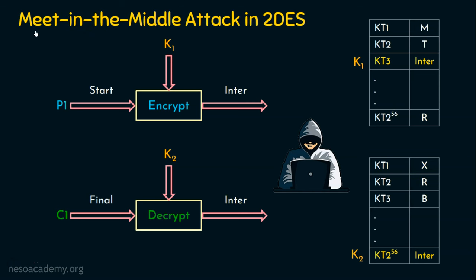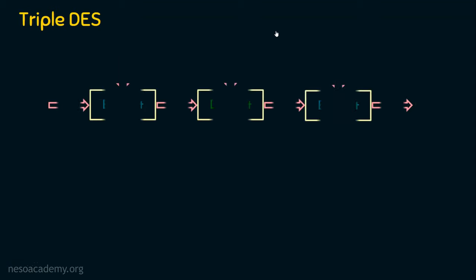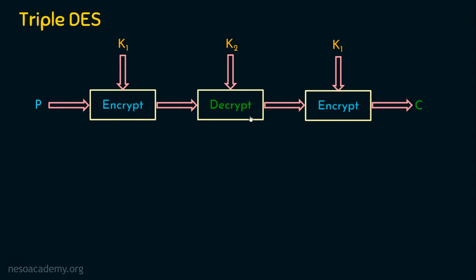This is exactly what we call the meet in the middle attack in double DES. Double DES is not widely used because of this attack. Now, shall we go for triple DES? In triple DES, unlike double DES which encrypts twice, we perform encryption two times and decryption one time within the encryption stage alone. The plaintext is given to the DES encryption algorithm with key K1 to produce an intermediary result. This intermediary result is given to the DES decryption algorithm with key K2, and the result of that is then given to the DES encryption algorithm one more time with K1, producing the final ciphertext C.